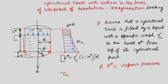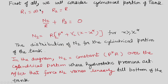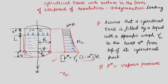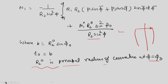The total pressure including hydrostatic effect is p_star plus gamma_l times (L minus x_star). When x equals or exceeds l there will be no hydrostatic contribution, only vapor pressure. For the cylindrical portion of the tank: R1 is infinity, R2 is R. From the equation n1/R1 plus n2/R2 plus p3 equals 0, since R1 is infinity this term drops out, giving n2/R plus p3 equals 0, so n2 equals R times p3. This is valid for x greater than or equal to x_star. The distribution of n2 for the cylindrical portion: n2 is constant where only vapor pressure acts and varies linearly as the hydrostatic pressure increases toward the bottom.